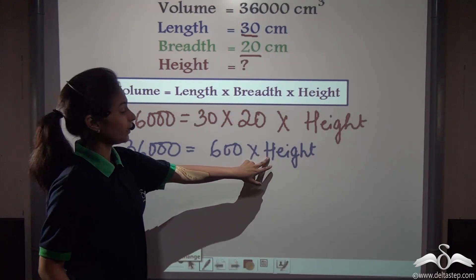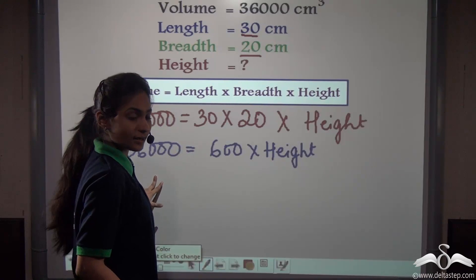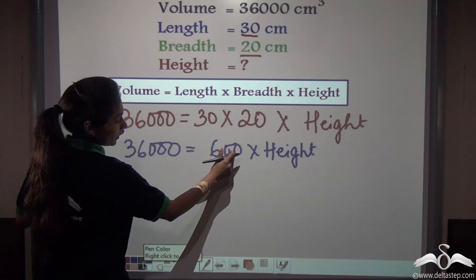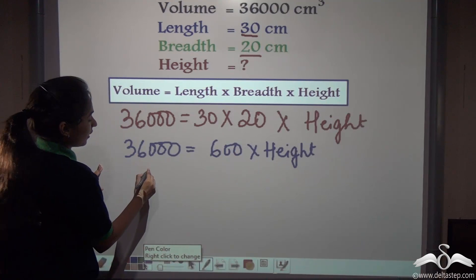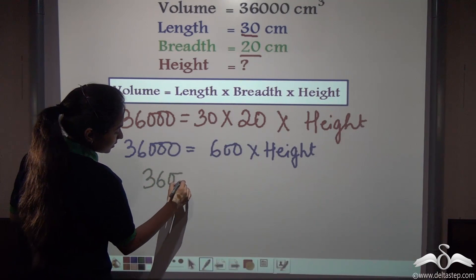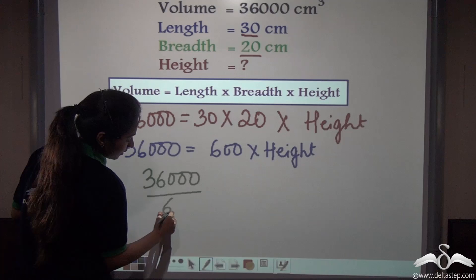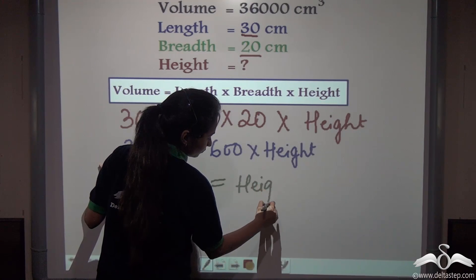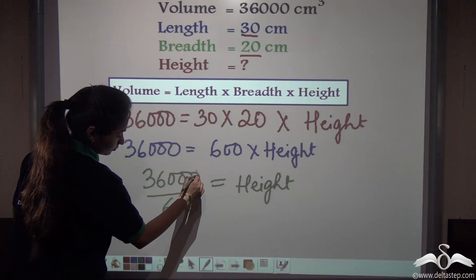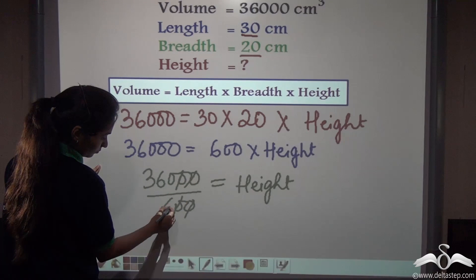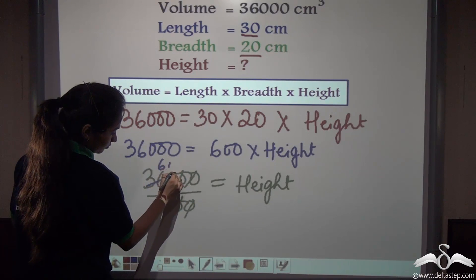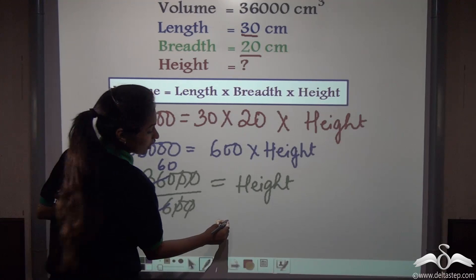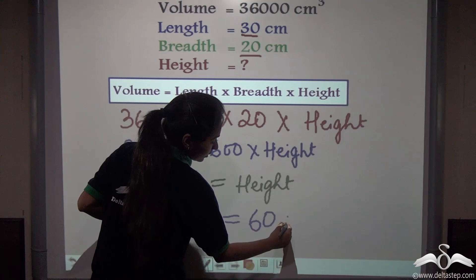Now to take out the height, I can shift this 600 to that side. Here it is multiplied, so taking it there we will divide it. So 36,000 divided by 600 will give me the height of my CPU. So height of the CPU is actually 60 centimeter.